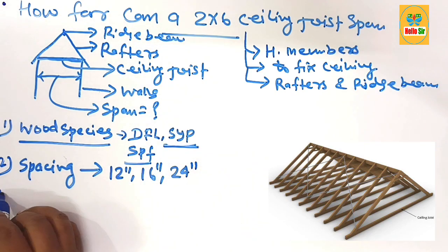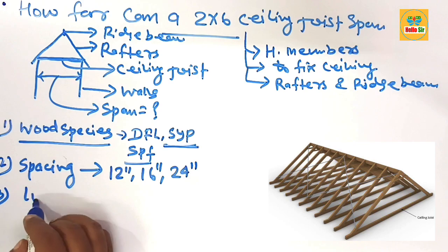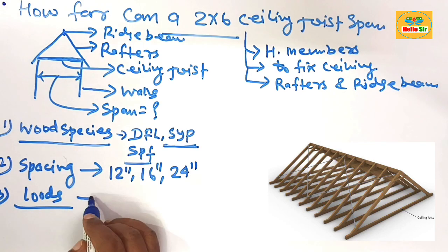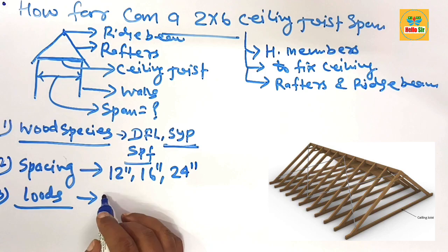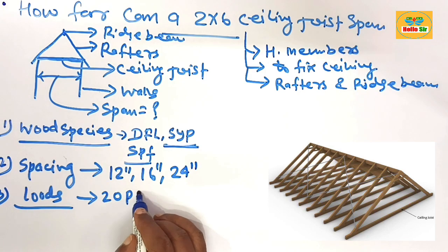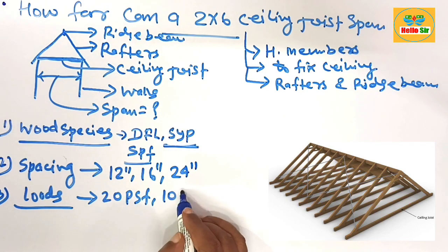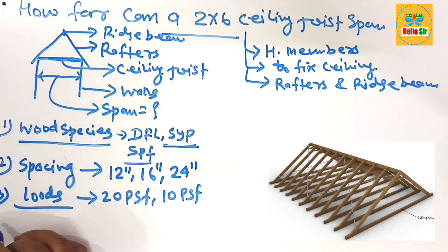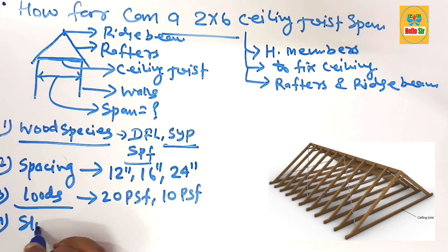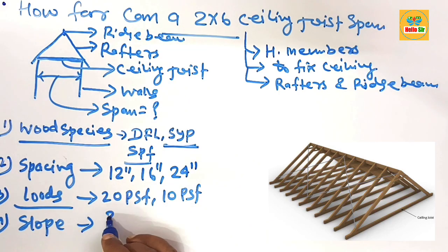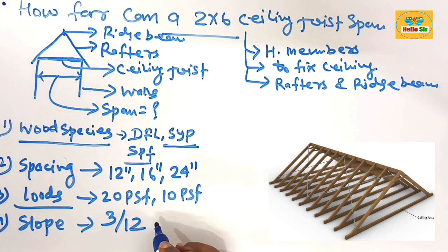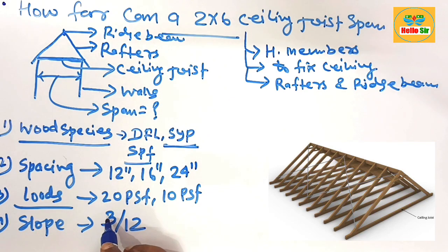The third factor is load: expected load, live load, and dead load. It may be 20 pounds per square foot, 10 pounds per square foot. And what is the roof slope? Slope may be 3 by 12 or 4 by 12. It means there are 3 inches of vertical rise for every 12 inches of horizontal run.